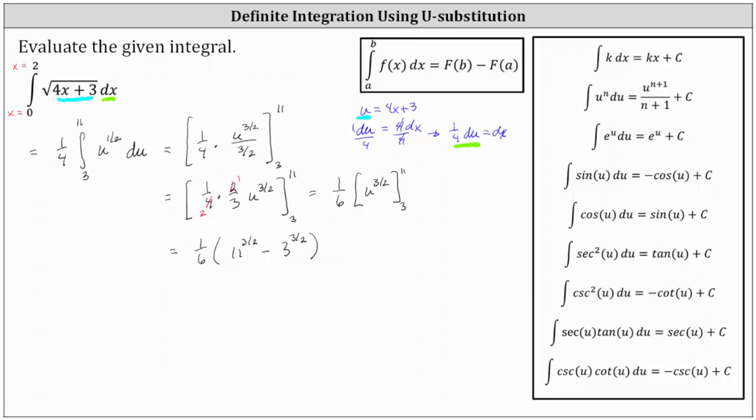But I also want to show how we can write this in radical form. A to the power of three-halves is equal to A to the first times A to the power of one-half, which is equal to A square root A. Which means we can also write the exact value as one-sixth times the difference of 11 square root 11 and 3 square root 3, which is approximately 5.2145.